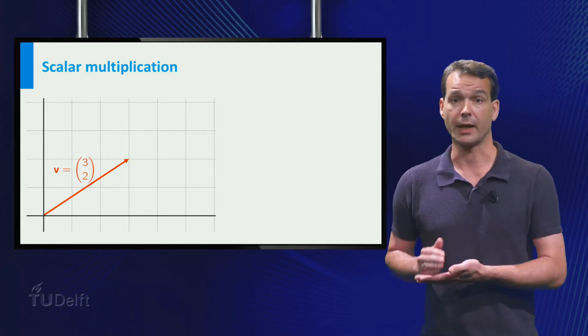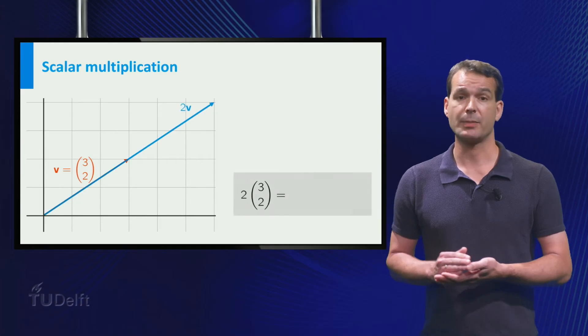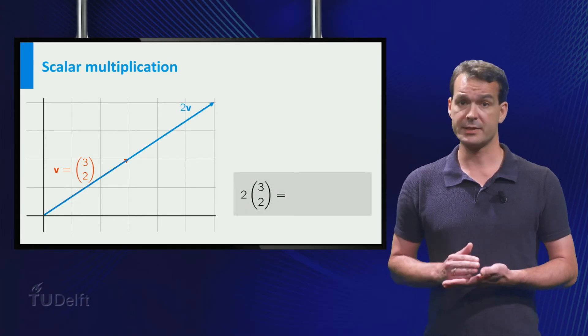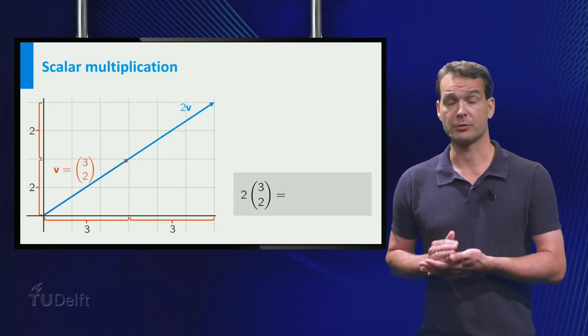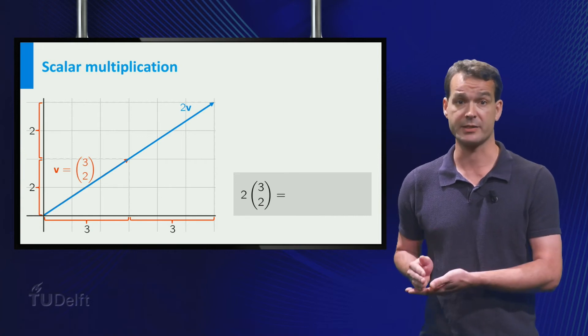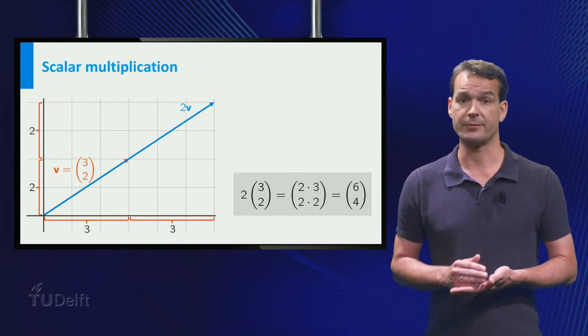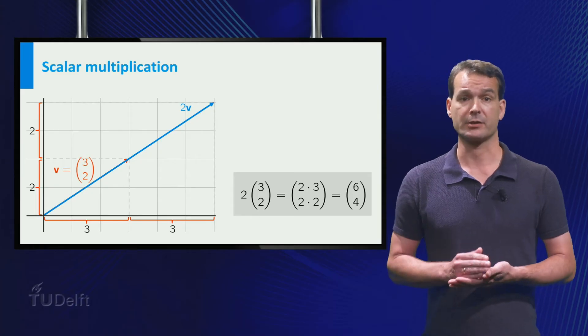Take the vector again and multiply this vector by 2. In this case we move 3 to the right twice and also 2 up twice. So 2 times the vector is the vector.